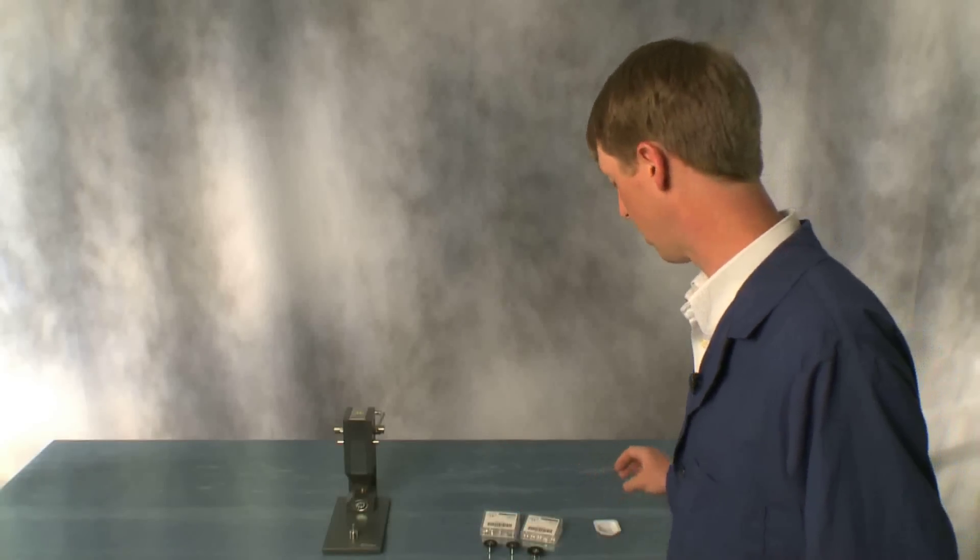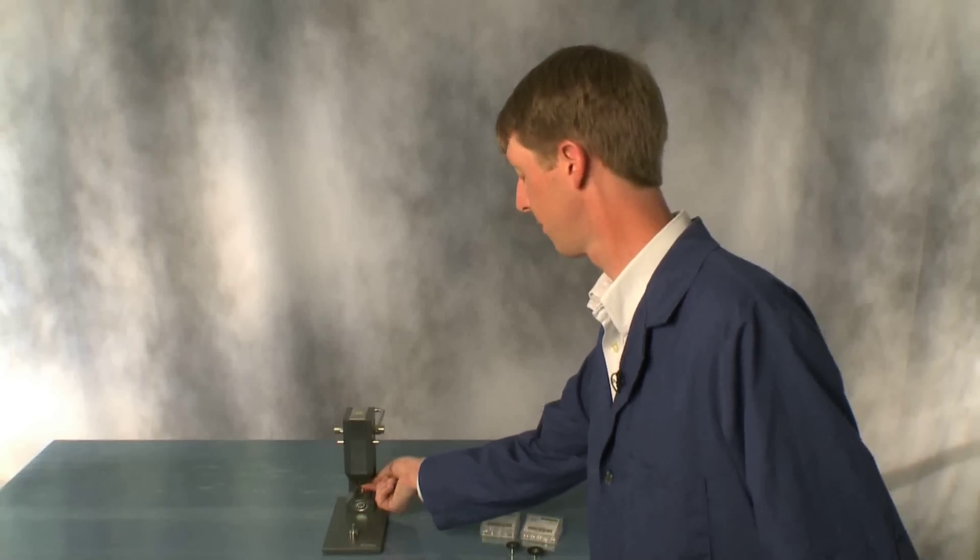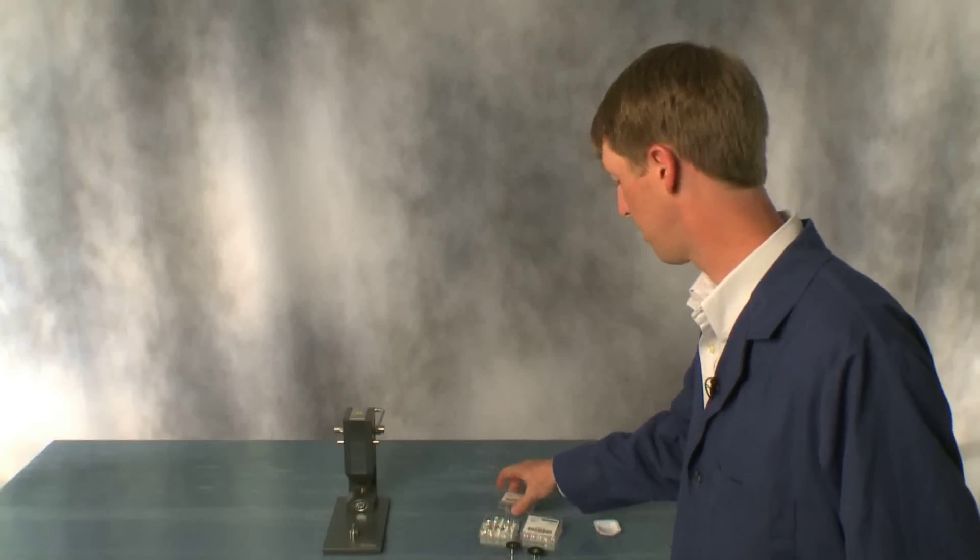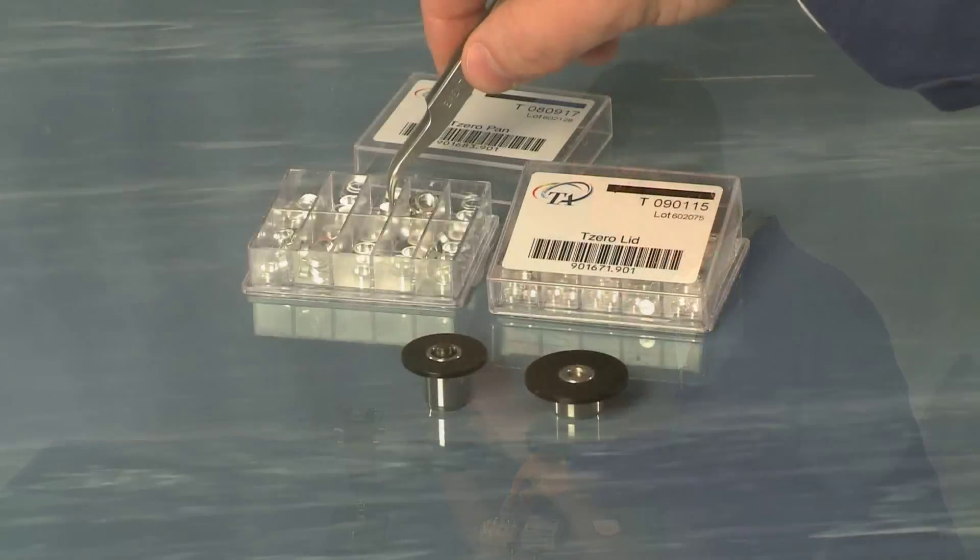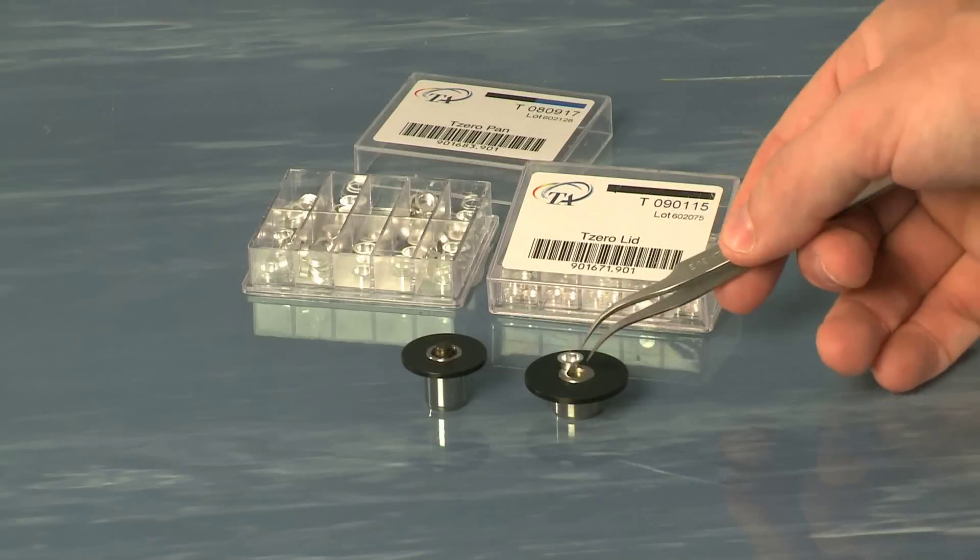First, take the hemispherical upper die and place it into the press. Then grab a pan and place that pan in the lower die.